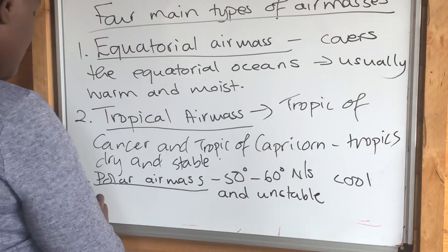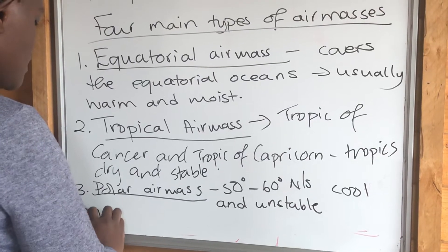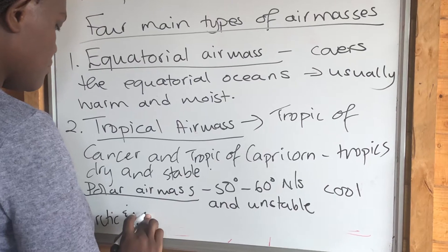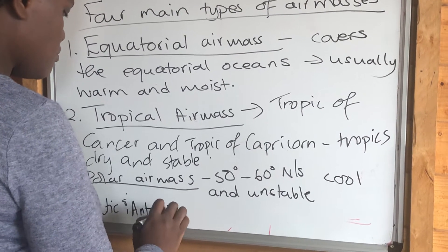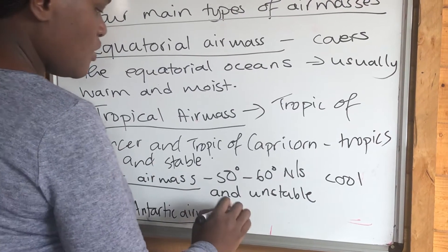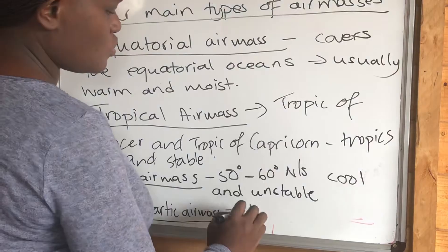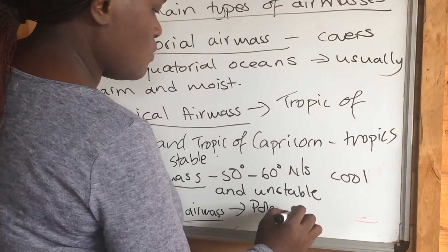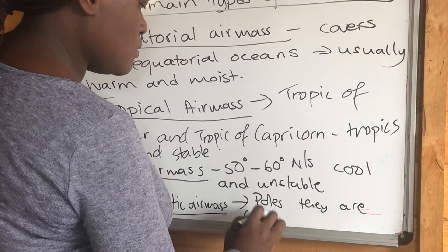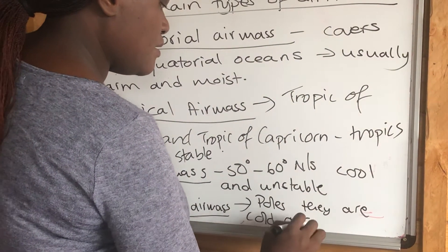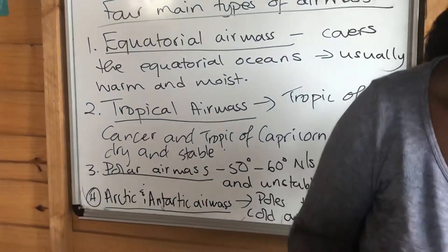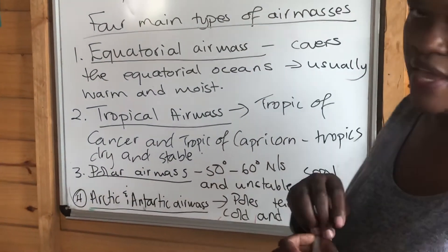And lastly, we have the Arctic and Antarctic AMSs. These ones are located at the poles — they are cold and stable. Those are the four main types of AMSs that we have.